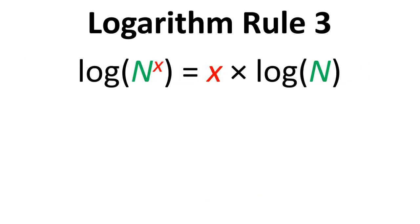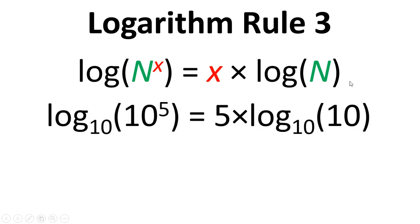The third and final rule that I want to tell you about is that if we have log n to the power of x, that is the same as x times the log of n. So taking a look at an example, if we have log 10 to the power of 5, that will equal 5 times log to the power of 10.